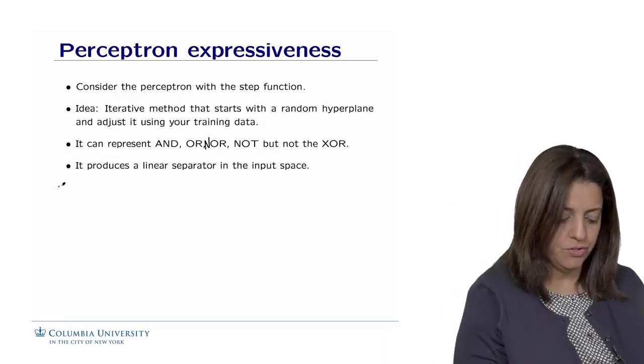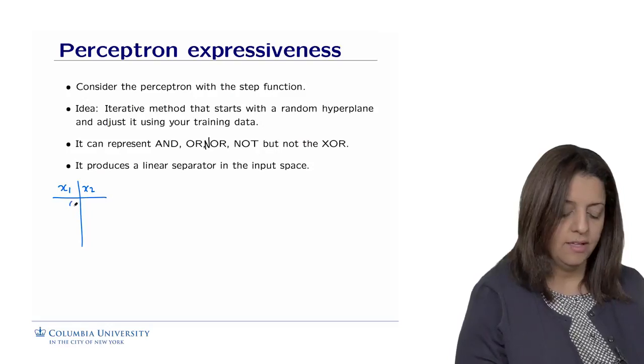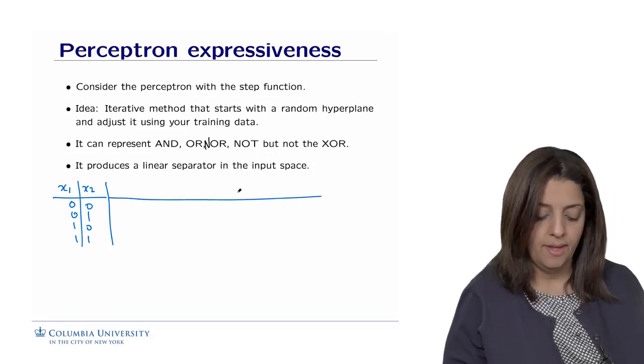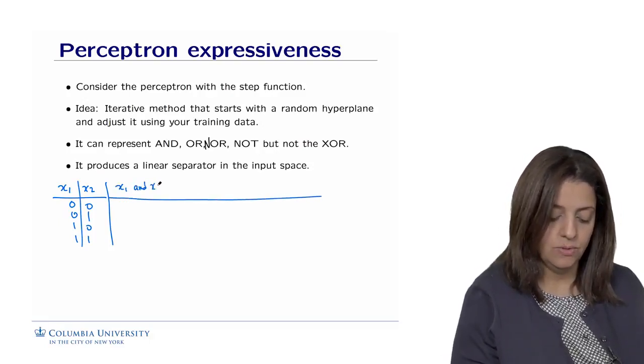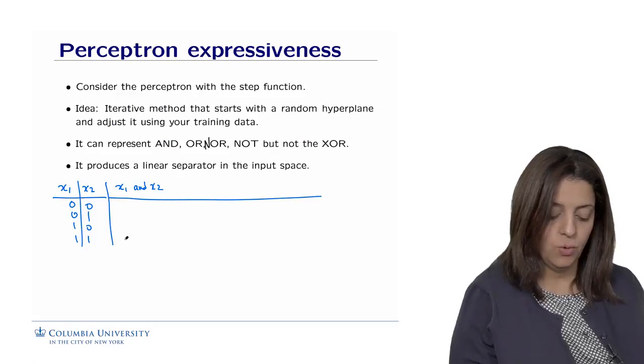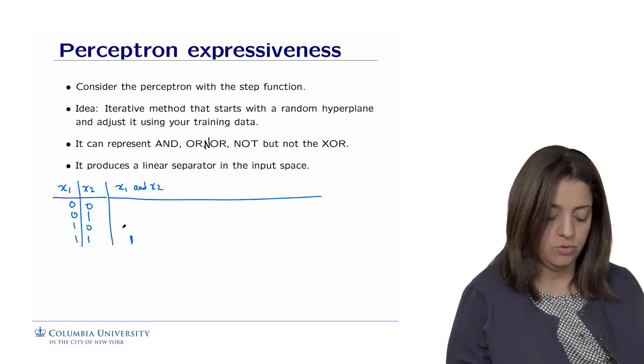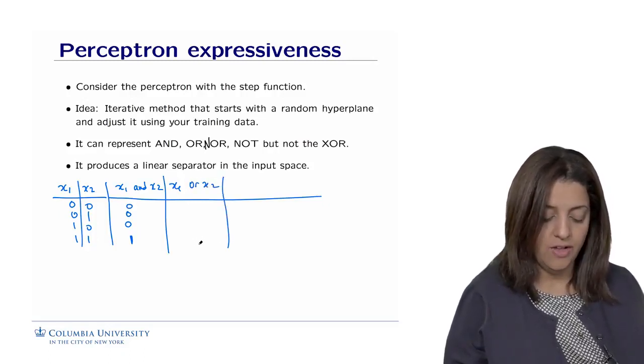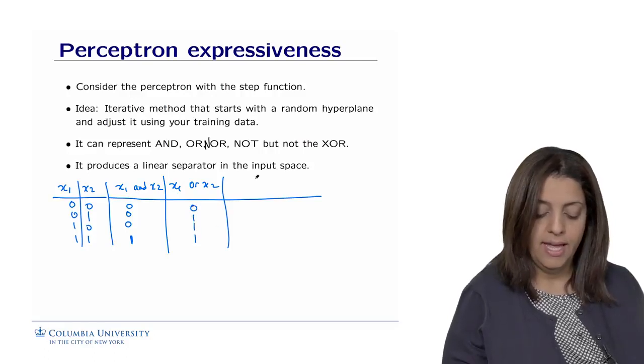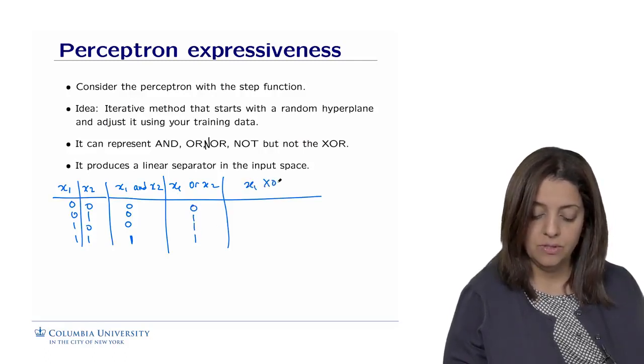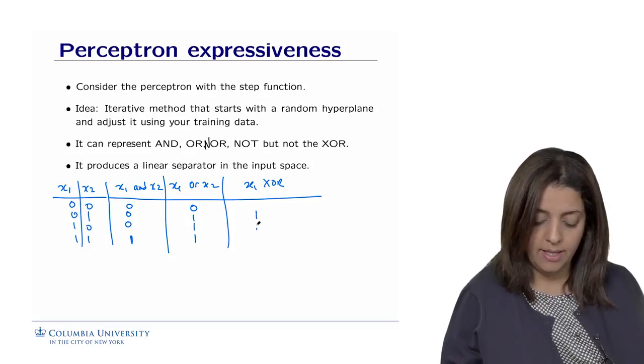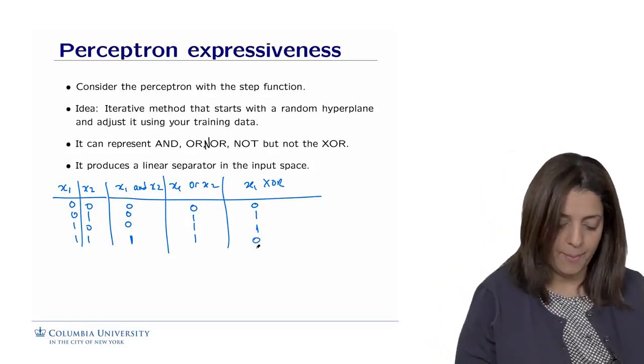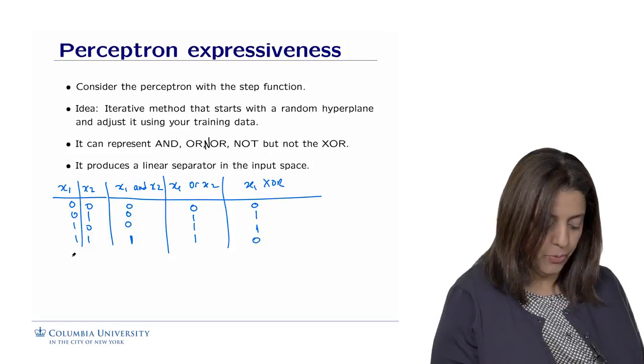It just produces a linear separator of the input space. Suppose we have two feature values, x1, x2. It could take either 0,0; 0,1; 1,0; and 1,1. We are going to express x1 AND x2 as a value that is equal to 1 only when both values are equal to 1, 0 otherwise. x1 OR x2 would be equal to 1 everywhere except when they're both equal to 0. And x1 XOR x2 would be actually equal to 1 only when they differ, so the rest would be equal to 0.